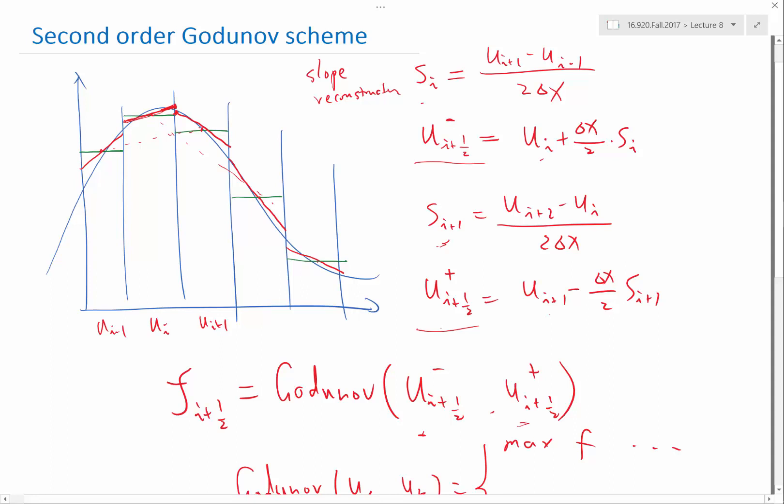This is a generalization of what we have been using earlier in this class. By properly constructing these s_i's as opposed to setting them to 0, we can get second-order accuracy.